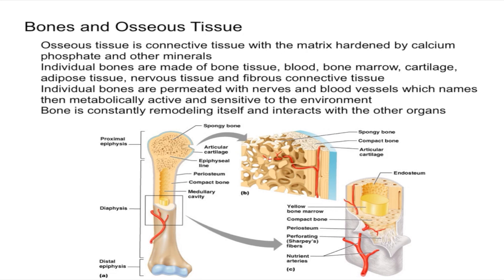Individual bones are made up of bone tissue, which is osseous tissue. They're also made up of blood, bone marrow, cartilage, adipose tissue, nervous tissue, as well as fibrous connective tissue.